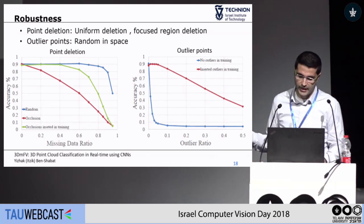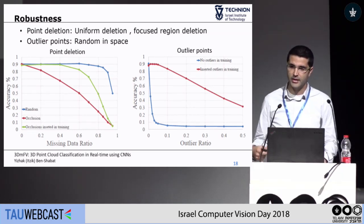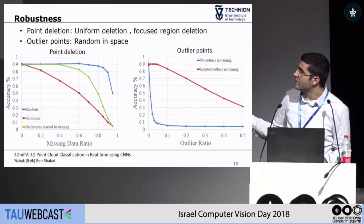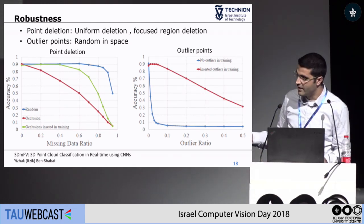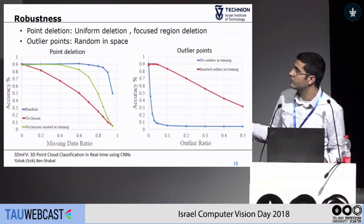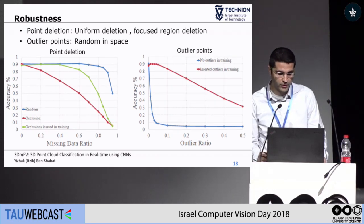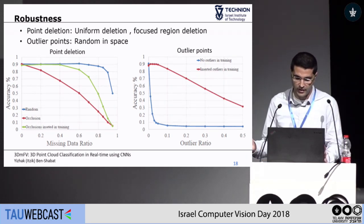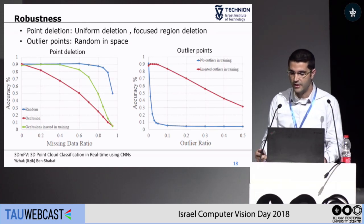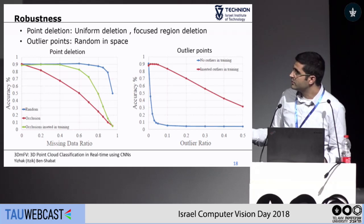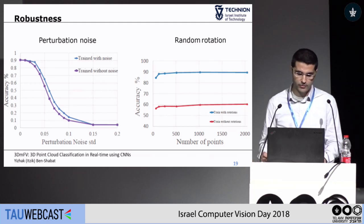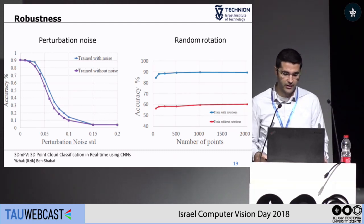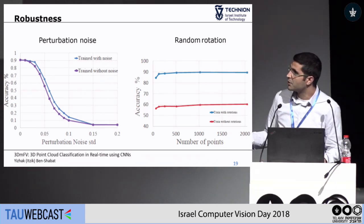We also tested robustness to outliers. Outliers change the representation quite significantly — when there are no outliers during training, results decline very fast. But when we introduce outliers during training, the results are maintained for approximately 5–10% outliers, then decline approximately linearly. For Gaussian noise perturbations, it doesn't matter much whether we include it during training or not — the method is fairly robust all the same.